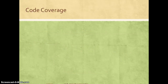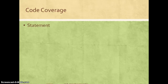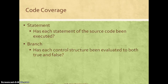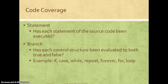Code coverage comes in different flavors and gives a metric or analysis of how well the code is being covered during simulation. Statement coverage tells you how much of the statements in the source code are executed during your tests. Branch coverage tells you whether every control structure has been evaluated to both true and false conditions — for example, if statements, case statements, or while statements — and whether all those branching conditions are covered by your tests.